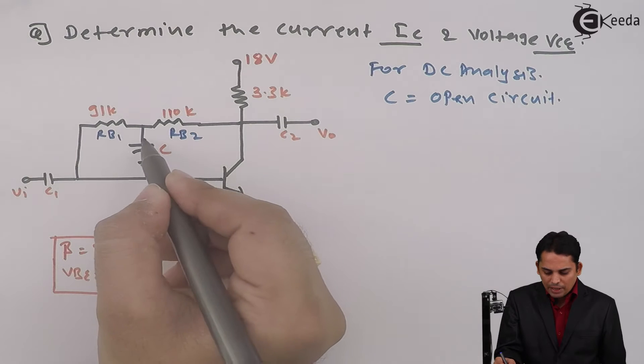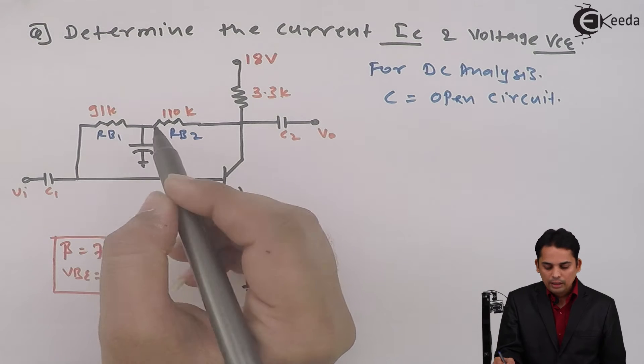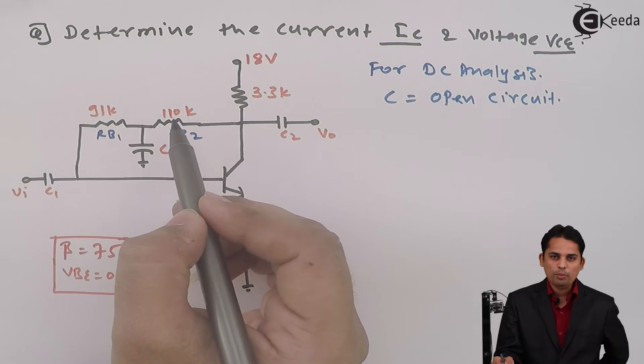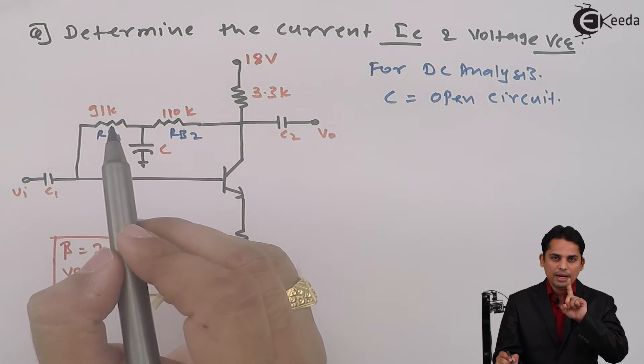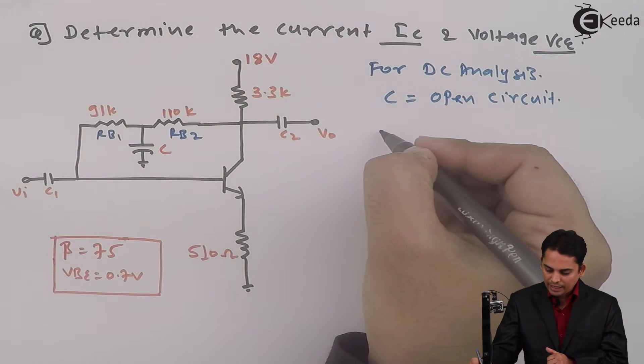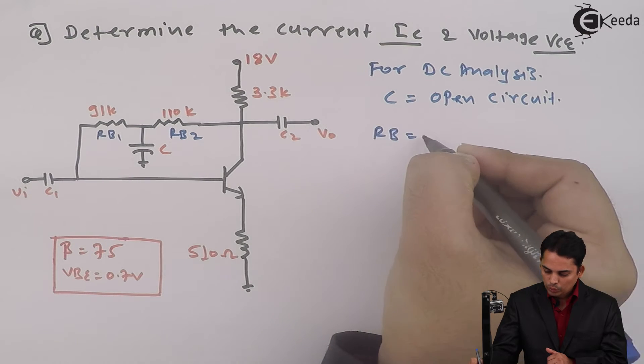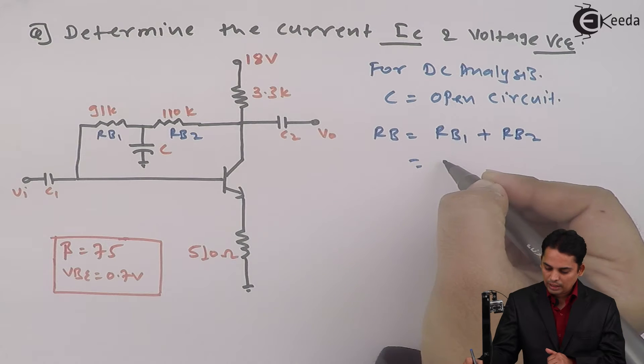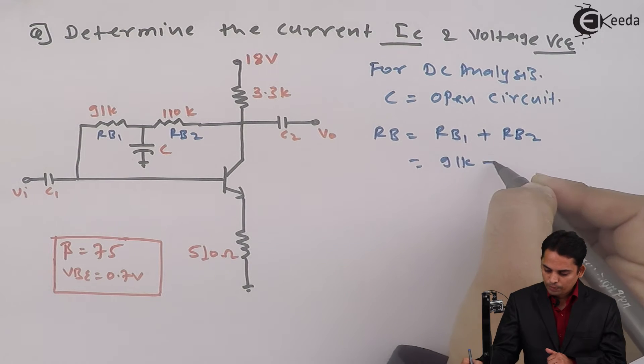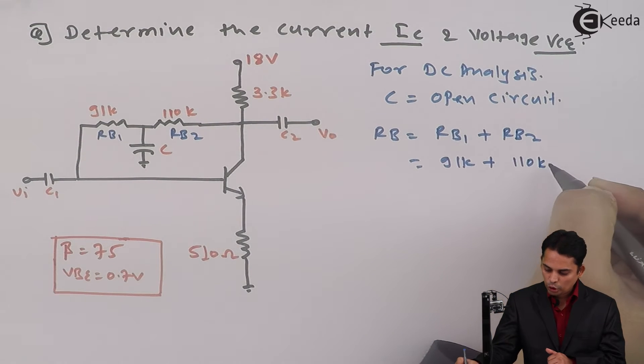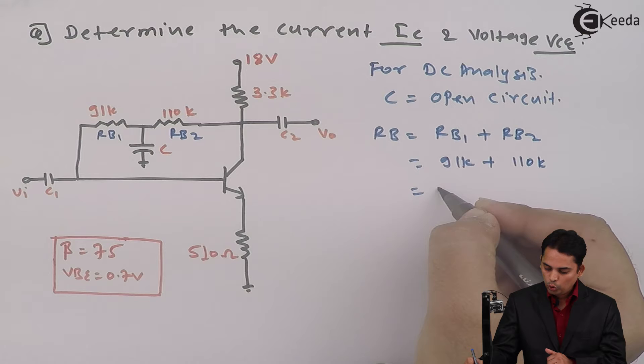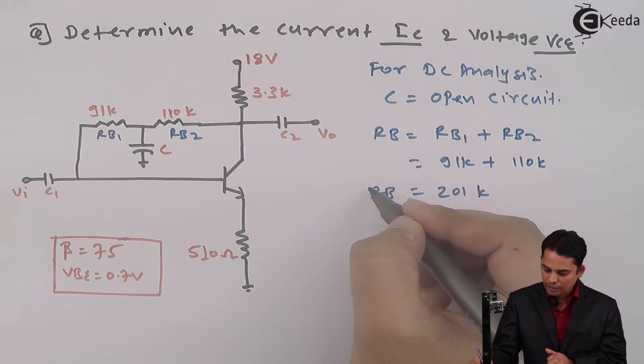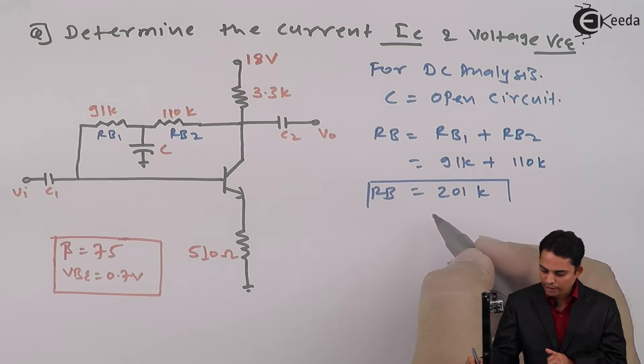So if this capacitor is open circuit, then these two resistors will be in series and they will form one resistor RB at the base. So we can write that RB is equal to RB1 plus RB2, which is nothing but 91 kilo ohms plus 110 kilo ohms, which is equal to 201 kilo ohms. So RB value is now 201 kilo ohms.